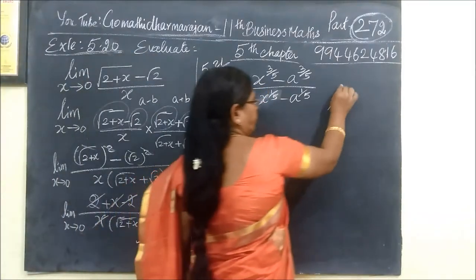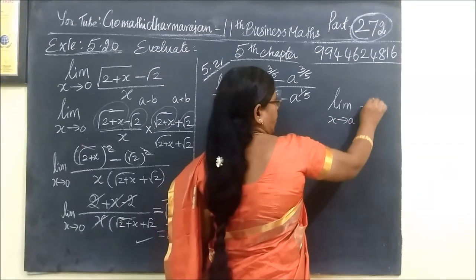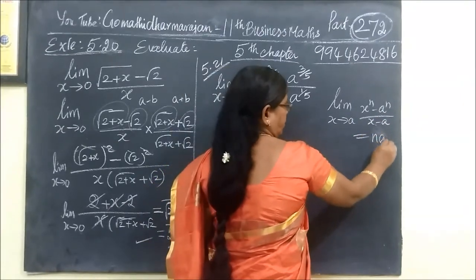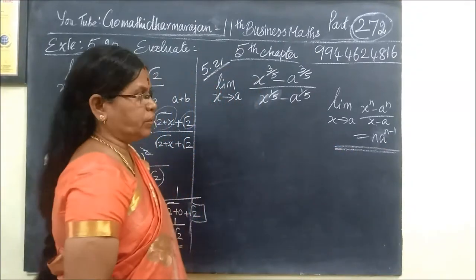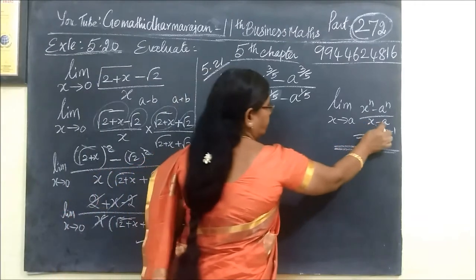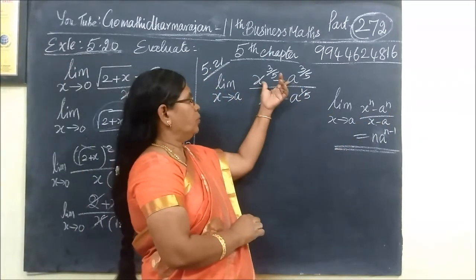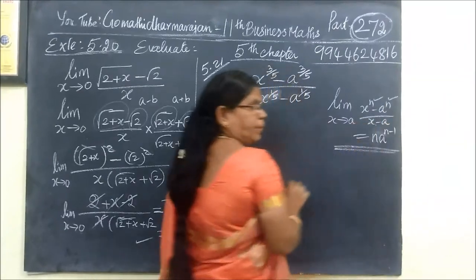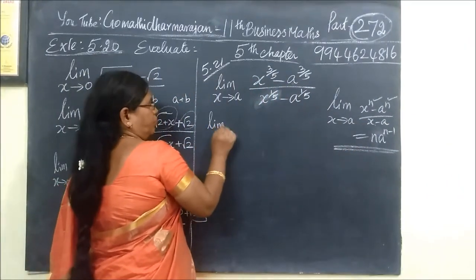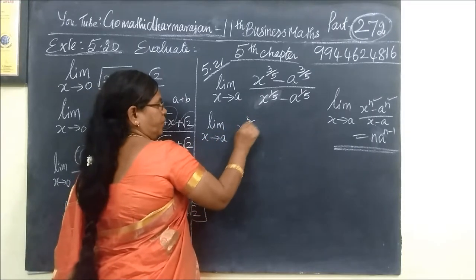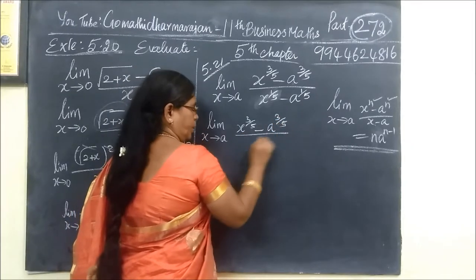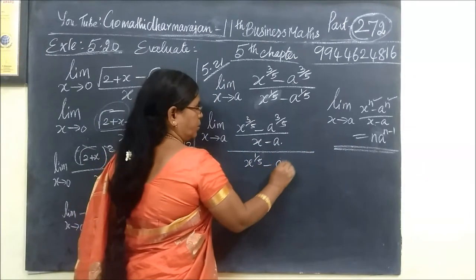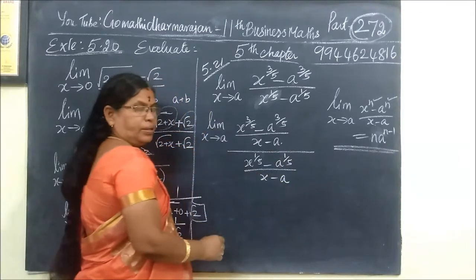Let's look at this. Limit x tends to a of x^(3/5) minus a^(3/5), divided by x^(1/5) minus a^(1/5). The very first formula is the limit formula: limit x tends to a of x^n minus a^n divided by x minus a equals n·a^(n-1). We multiply and divide by x minus a to apply the standard formula.